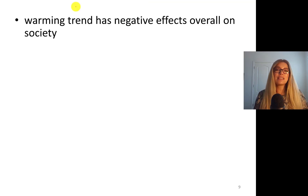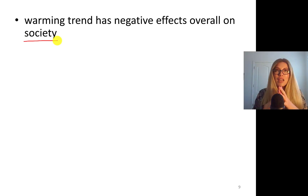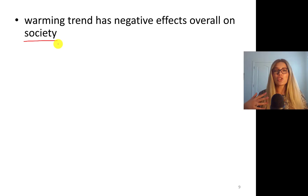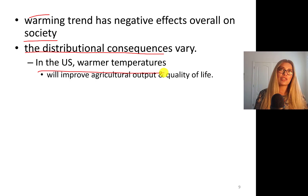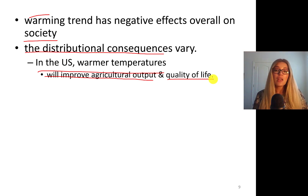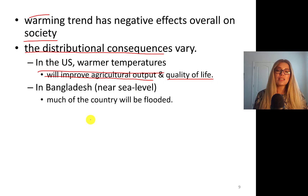The warming trend has negative effects overall on society. I'm a professor at Texas A&M Corpus Christi in South Texas where it gets really hot — around 120 Fahrenheit, about 45 Celsius, and very humid. The distributional consequences are different: warmer temperatures in parts of the US like New York will improve agricultural output and quality of life, but in Bangladesh, a country near sea level, much of the country will be flooded.